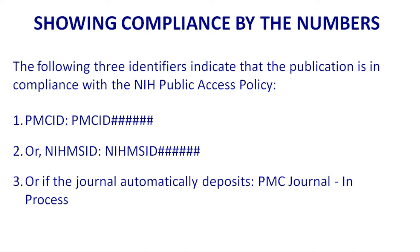Those journals that deposit the final version and are on the list in Method A — you can say 'PMC journal in process,' because they actually get 12 months to do the deposit. They don't necessarily have to do it right away, so that's why you indicate PMC journal in process.